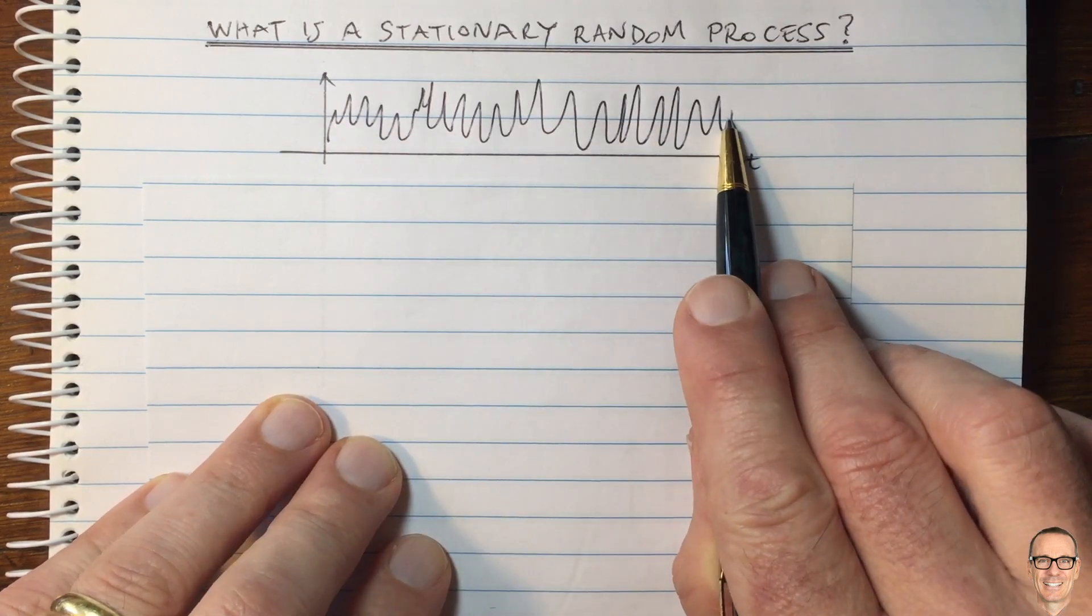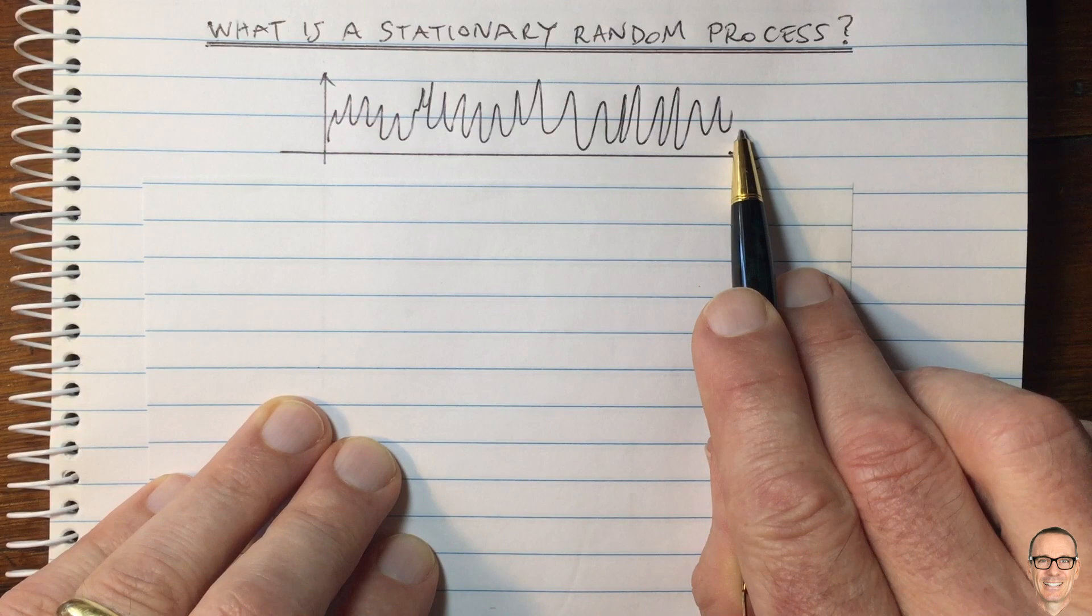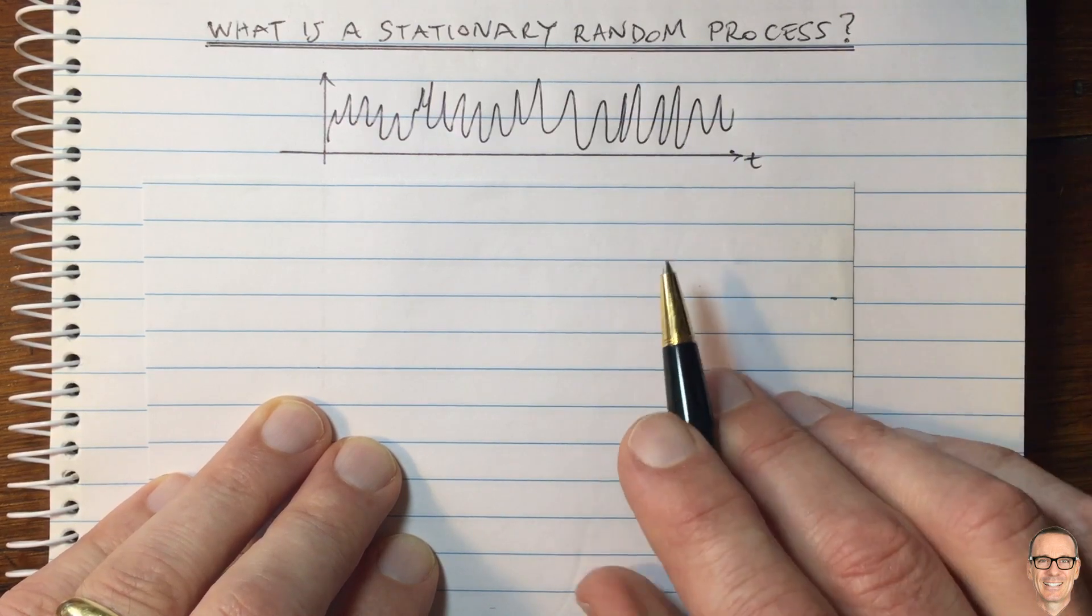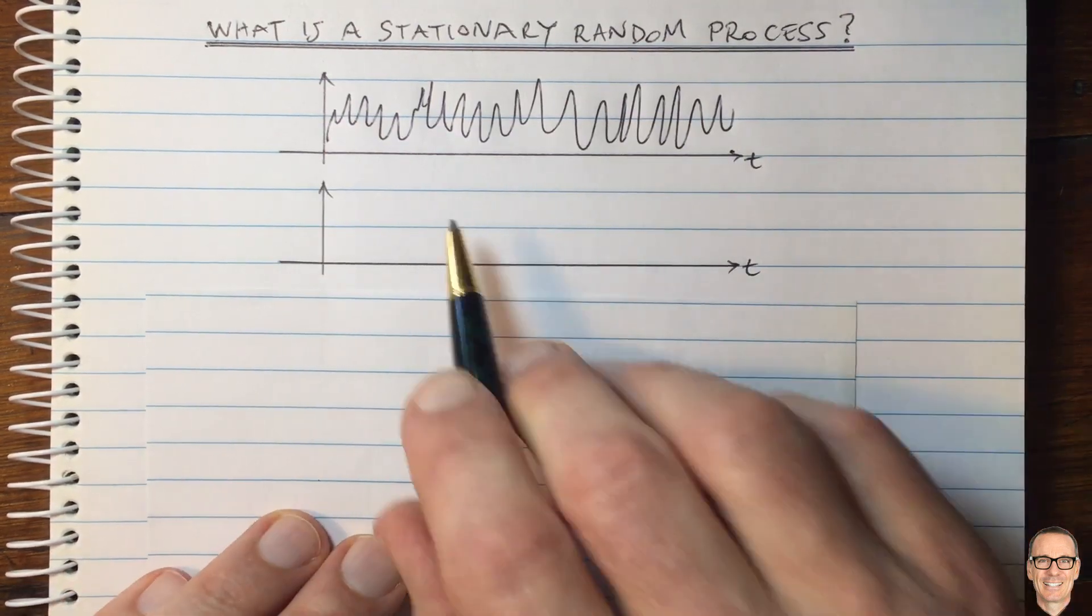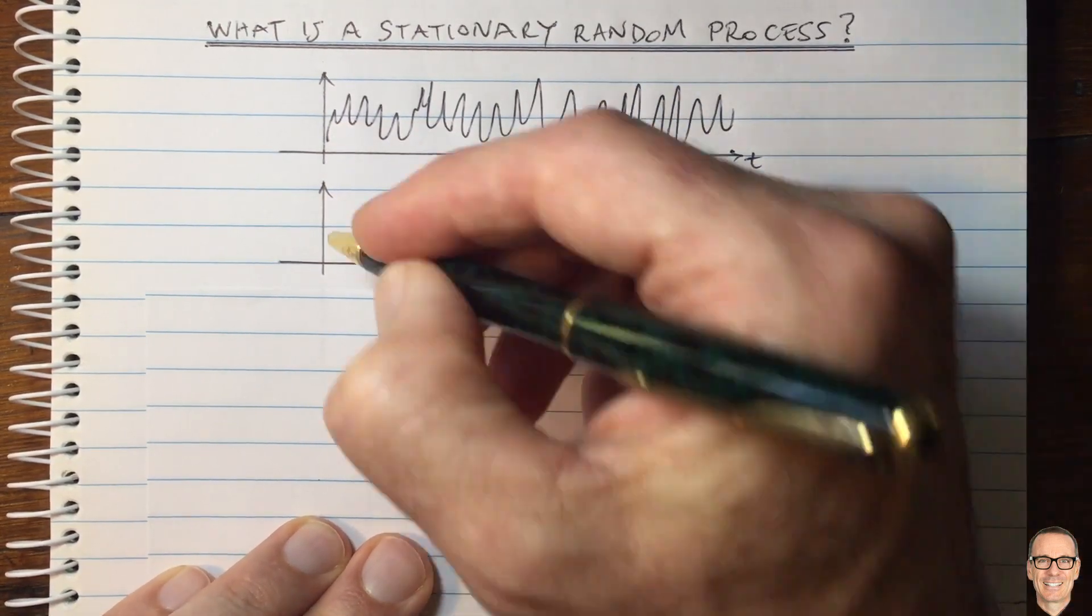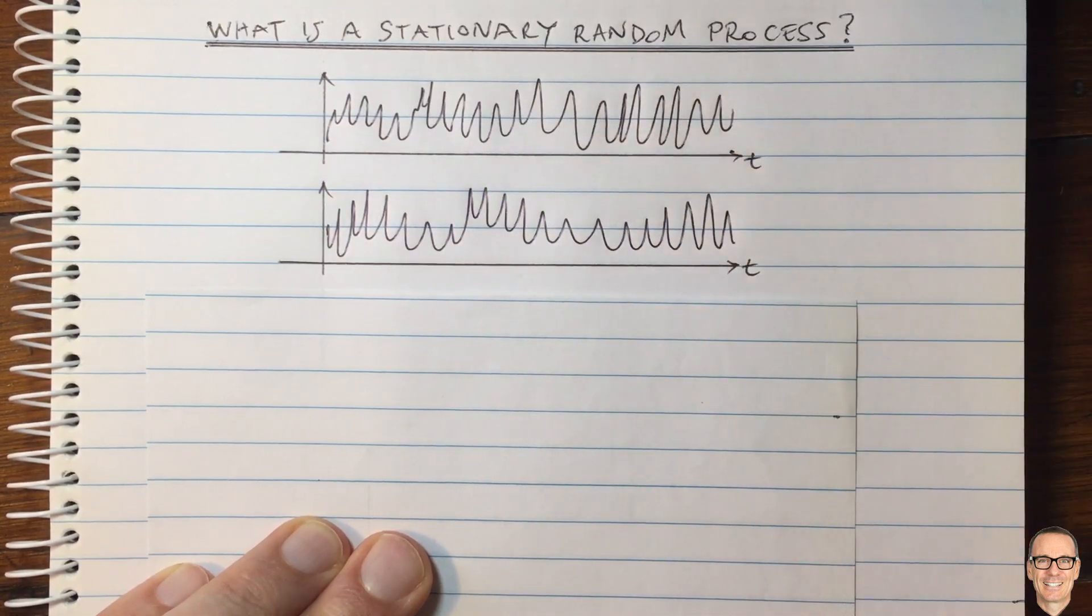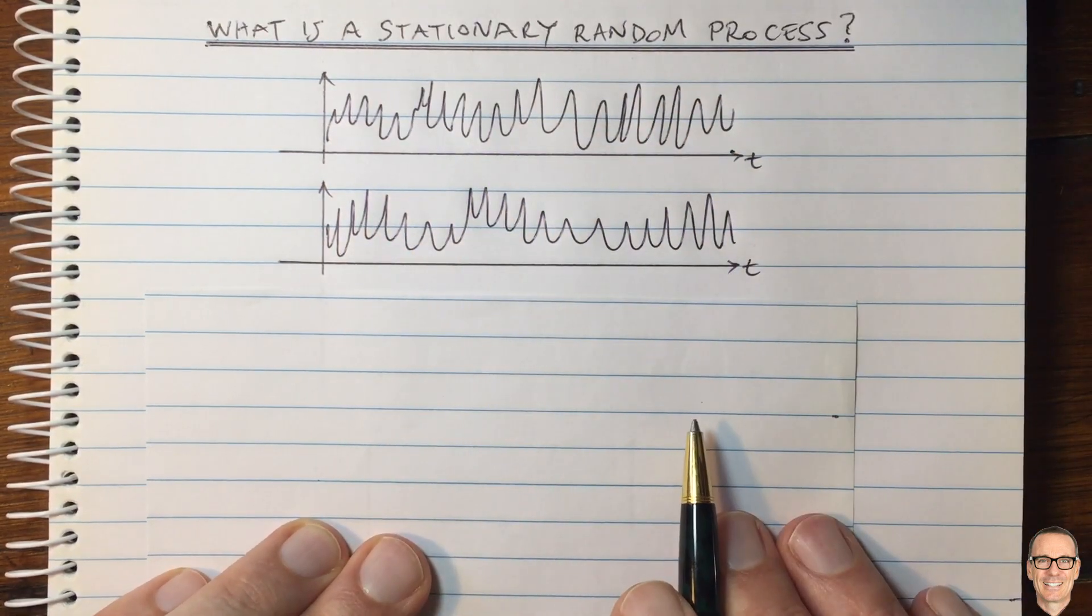And this might be an example waveform that is measured over that period of time during the day. Of course, if we look at the next day, then it won't be the same function again because it is a random function. And on the next day, maybe the noise looks like this, for example.